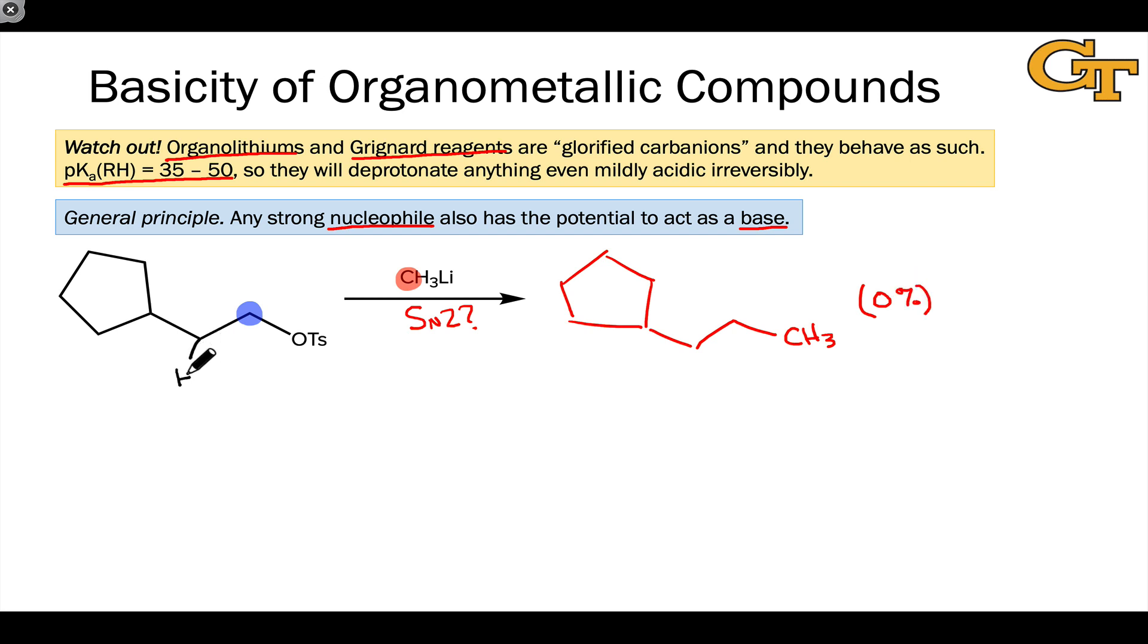Instead, the methyl anion will act as a Bronsted base rather than a Lewis base or nucleophile, and in doing so it will deprotonate a beta-hydrogen resulting in E2 elimination. This gives an alkene product in which the elements of tosic acid, HOTS, have been eliminated from the starting material, and this isn't what we wanted.